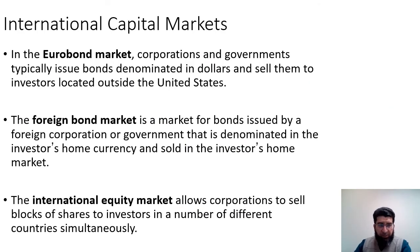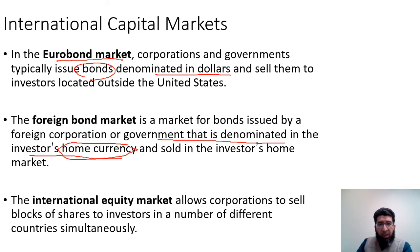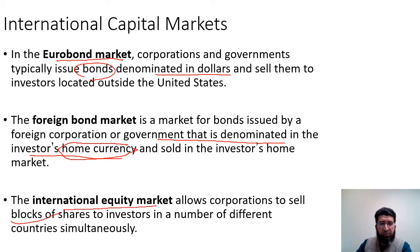International capital markets play an important role in portfolio diversification. In the eurobond market, corporations and governments issue bonds denominated in dollars and sell them to investors outside the United States. The foreign bond market is for bonds issued by a foreign corporation or government, denominated in the investor's home currency and sold in the investor's home market. The international equity market allows corporations to sell blocks of shares to investors in multiple different countries simultaneously.